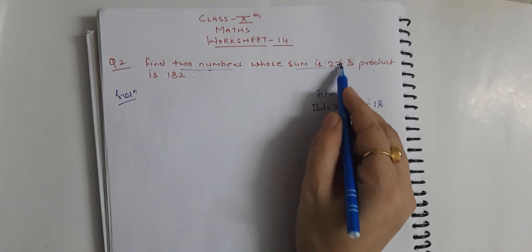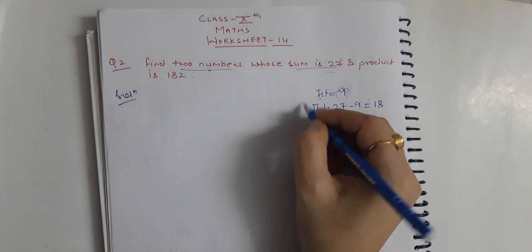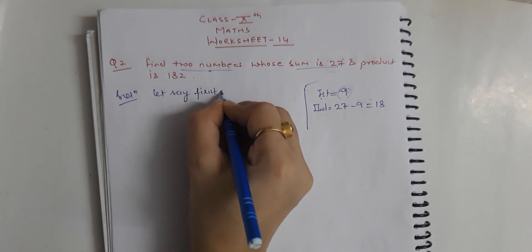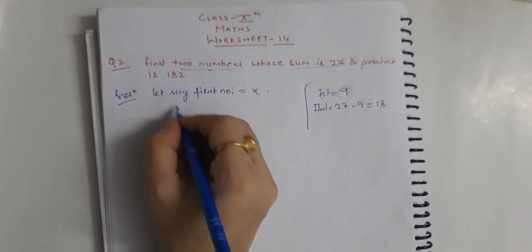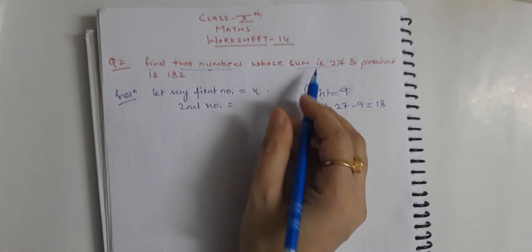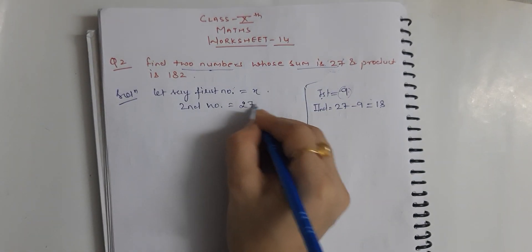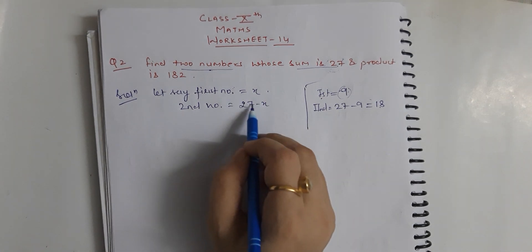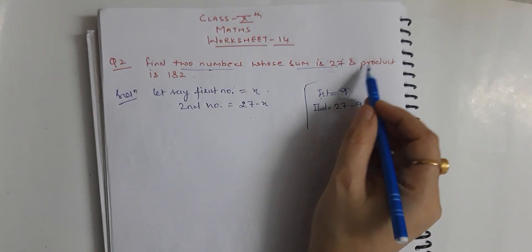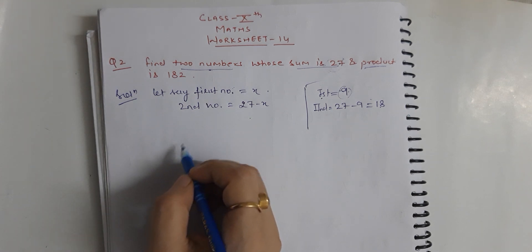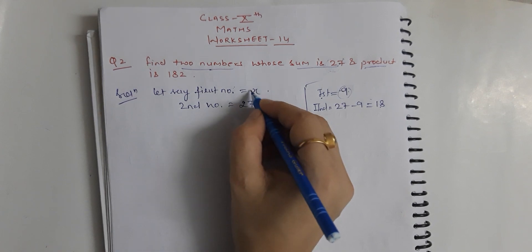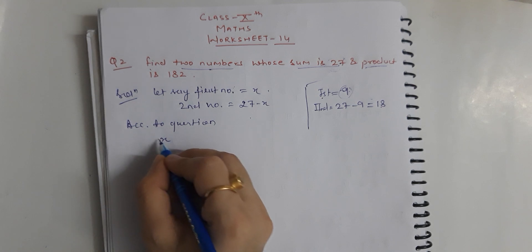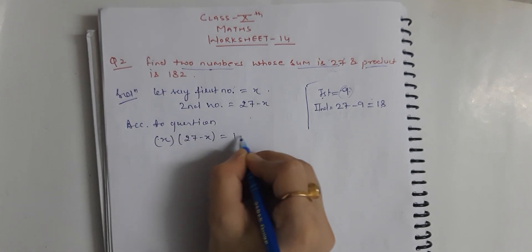Since I know both numbers sum to 27, if I take one number as x, the second number would be 27 minus x. Now, according to the question, the product of these two numbers is 182, so we will make an equation using this.